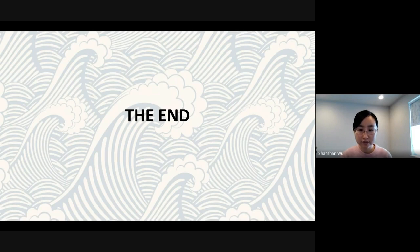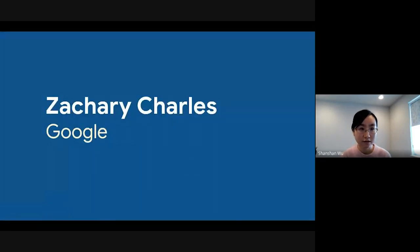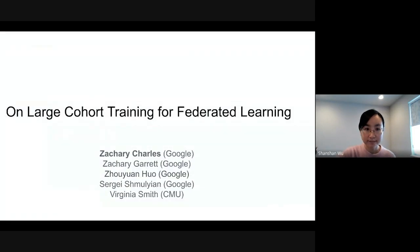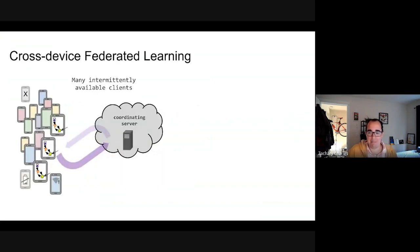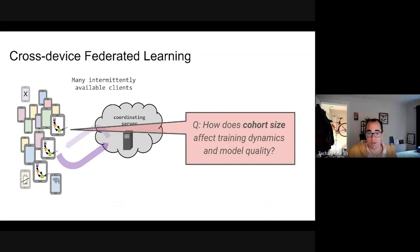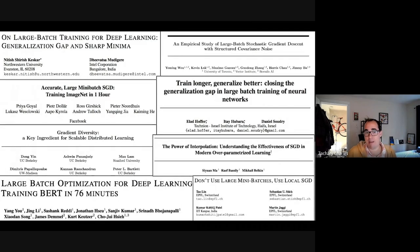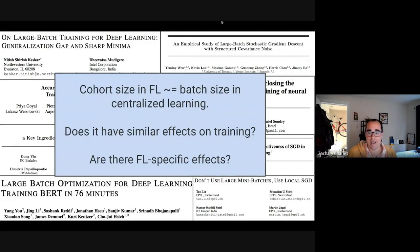Our next speaker is Zach Charles from Google. He will be telling us about large cohort training. We study cross-device federated learning, and specifically we are interested in settings with many intermittently available clients. The simple question we pose is how cohort size affects training dynamics and model quality. There are many papers trying to understand large-batch training for centralized learning, and we ask whether cohort size in FL mirrors that kind of effect — but instead of the number of examples per round, we are dictating the number of users.